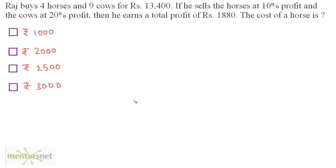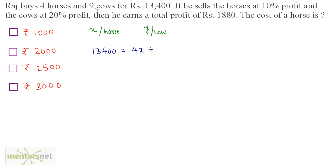Raj buys 4 horses and 9 cows for Rs. 13,400. If he sells the horses at 10% profit and the cows at 20% profit, he earns a total profit of Rs. 1,880. What is the cost of a horse? Let the cost of a horse be Rs. X and the cost of a cow be Rs. Y. Then equation 1: 4X + 9Y = 13,400.